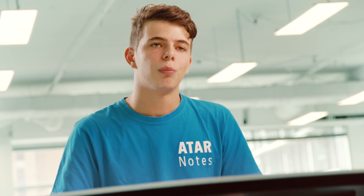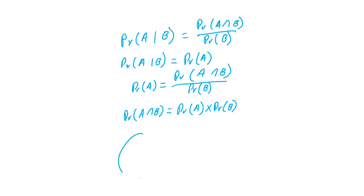Looking back, when we think of independent events, we think about the formula: the probability of A intersection B is equal to the probability of A times the probability of B. When we think of mutually exclusive events, we think of those two separate circles on the Venn diagram with zero overlap. These are two things that should not be mixed up, as they share no common elements. Hopefully this helps you in preparing for your VCE exam and you don't make the mistake that a lot of other students will.